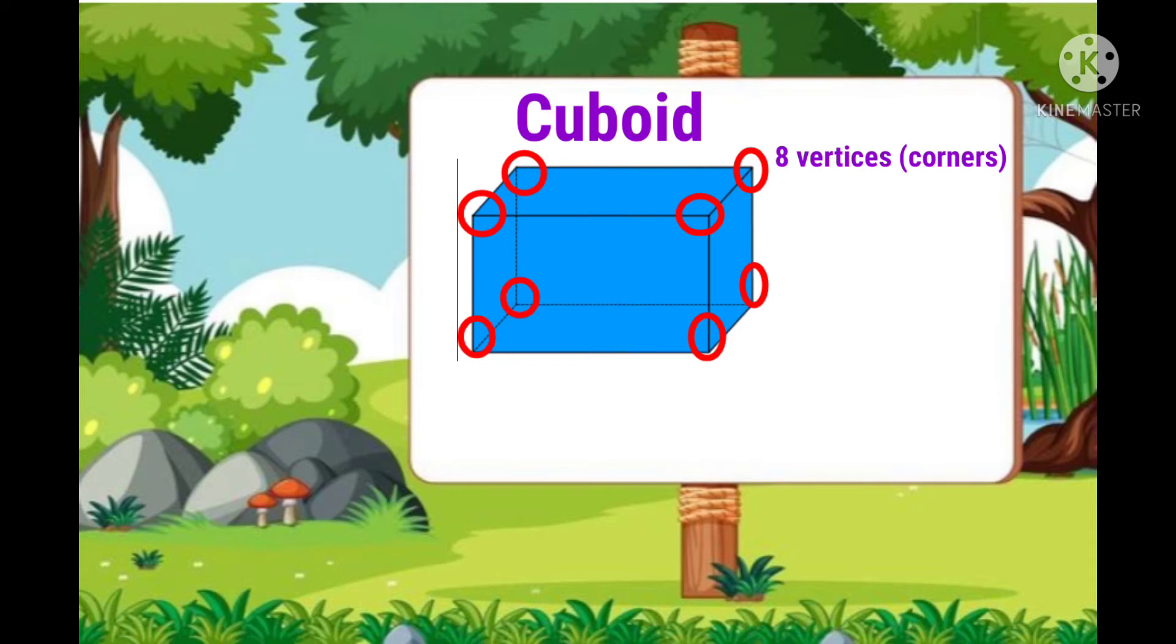A cuboid has 6 surfaces or faces in the right, in the left, on the top, in the bottom, in the back. Children, in this picture, you can't see the back side in the front.